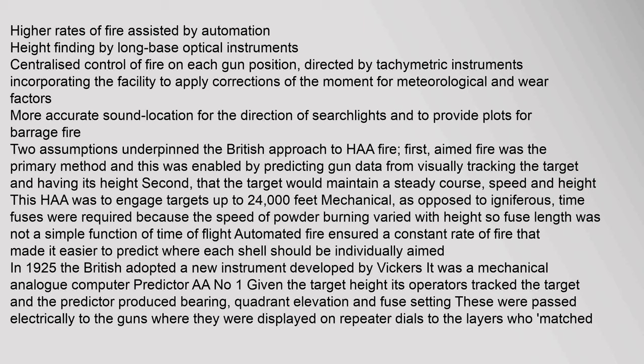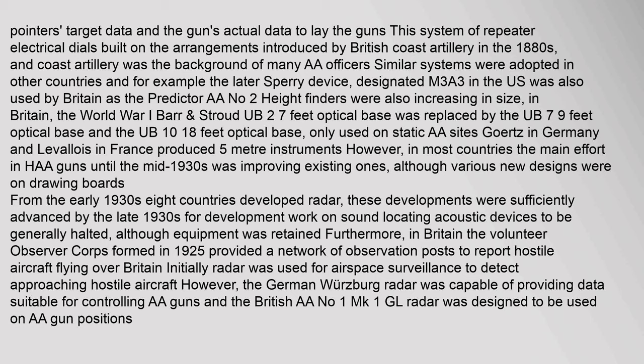In 1925 the British adopted a new instrument developed by Vickers — a mechanical analog computer predictor, AA No. 1. Given the target height, its operators tracked the target and the predictor produced bearing, quadrant elevation, and fuse setting, passed electrically to the guns where they were displayed on repeater dials. Similar systems were adopted in other countries; for example, the later Sperry device designated M3A3 in the US was also used by Britain as the Predictor AA No. 2. Height finders were also increasing in size.